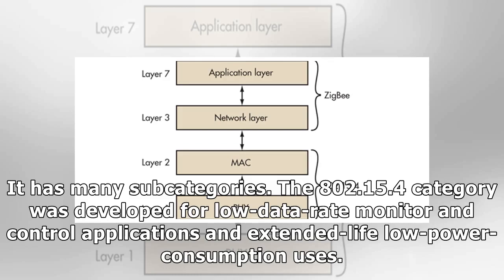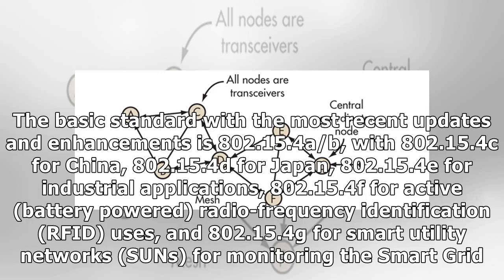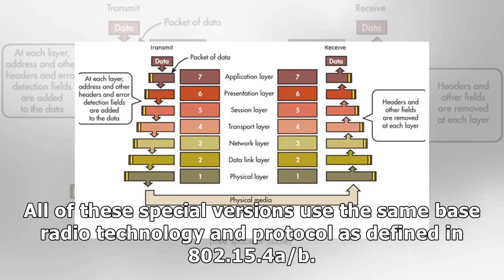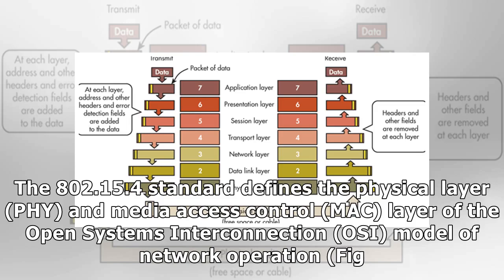The 802.15.4 category was developed for low data rate monitor and control applications and extended-life, low-power consumption uses. The basic standard with the most recent updates is 802.15.4a/b, with 802.15.4c for China, 802.15.4d for Japan, 802.15.4e for industrial applications, 802.15.4f for active battery-powered RFID uses, and 802.15.4g for smart utility networks (SUNs) for monitoring the smart grid.